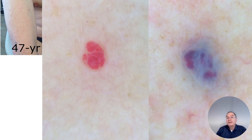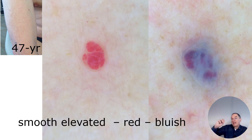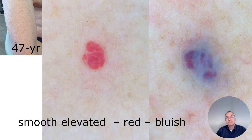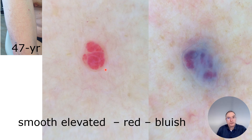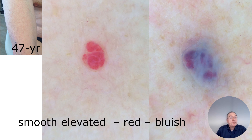We know these lesions — they are smooth and a little bit elevated on palpation. We know them also from their different colors. The colors depend on the location of the angioma. Here in the middle on the left hand side we see a clear, very fresh red, meaning it is just underneath the basal membrane with a lot of oxygen. On the right hand side it is a little bit more bluish, meaning deeper in the dermis and perhaps less oxygen. So depending on the color we can tell where the angioma is located.